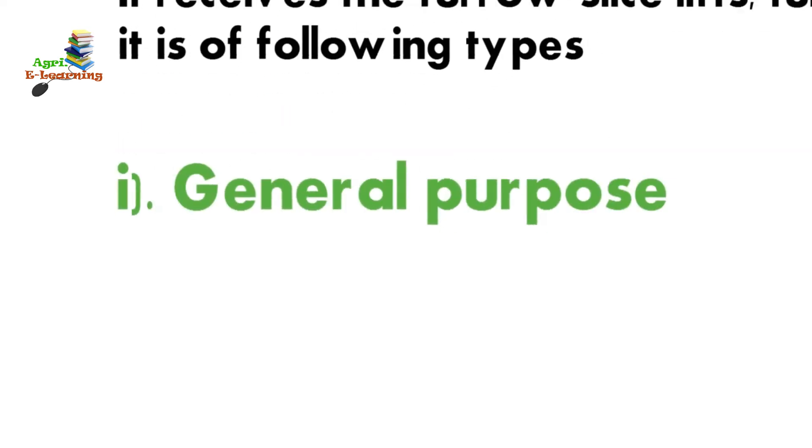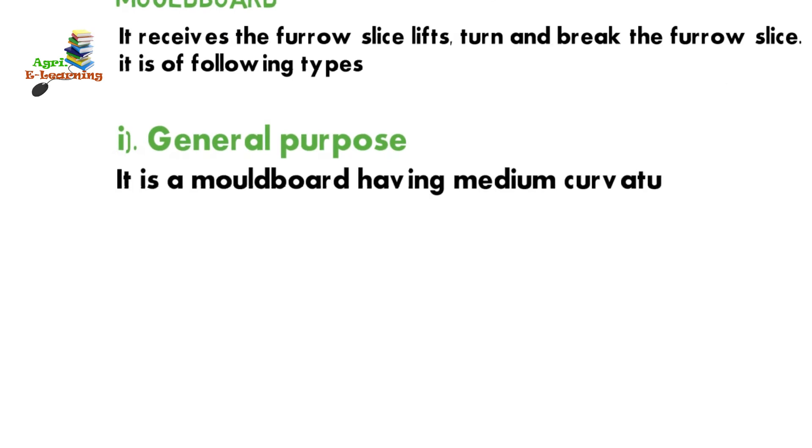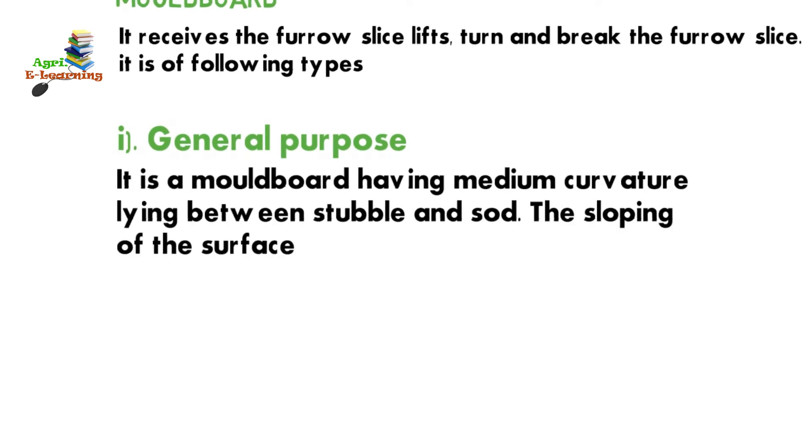It is of the following type: general purpose. It is a moldboard having medium curvature lying between stubble and sod. The sloping of the surface is gradual.